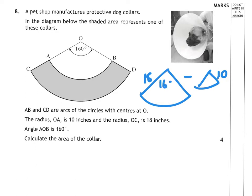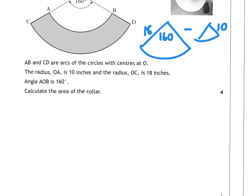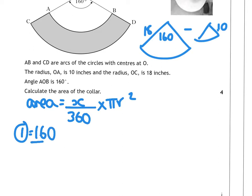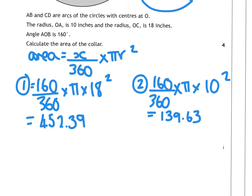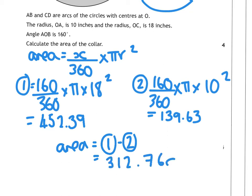So you're literally going to do sector 1 take away sector 2. Area for a sector is angle over 360 times pi R squared. So for the big one, area 1 is 160 over 360 times pi times 18 squared. Area 2 is going to be 160 over 360 times pi times 10 squared. We're going to get both those answers. So the shaded area is area 1 taking area 2. Subtracting those two answers gives you 312.76 centimetres squared to two decimal places.